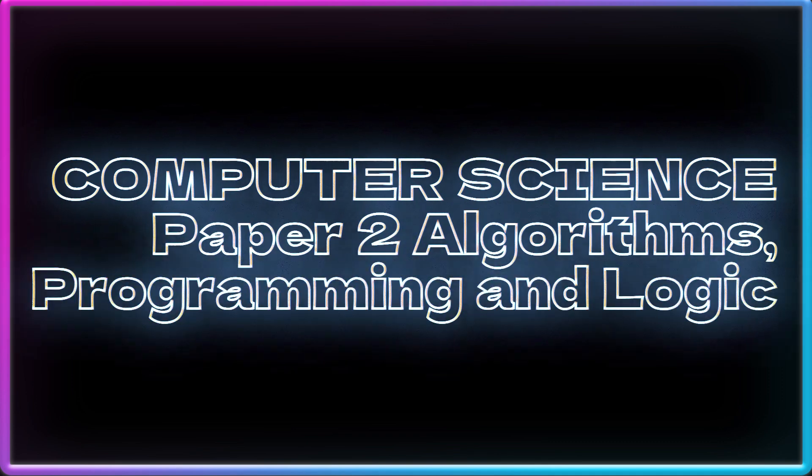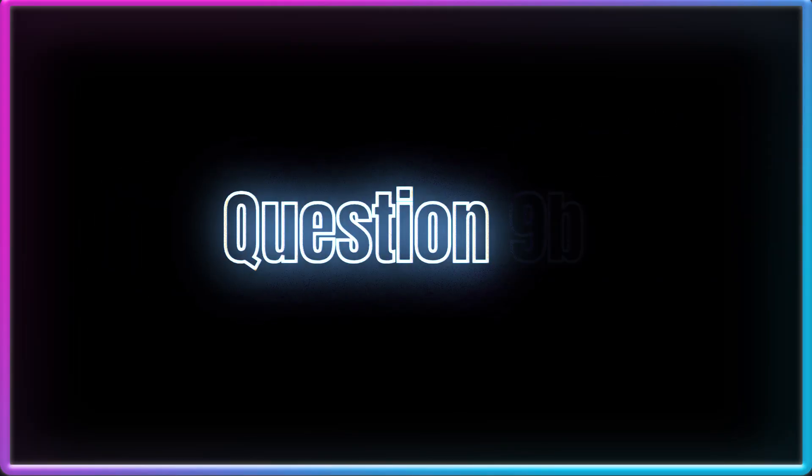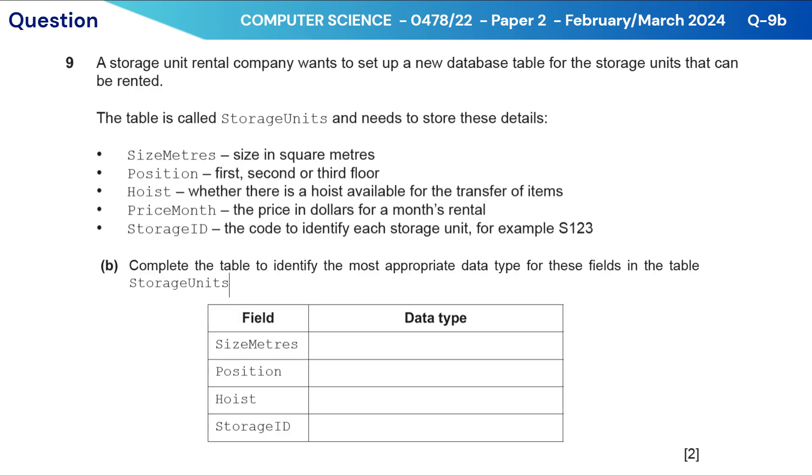Hi guys, welcome to this video. Today we are going to solve question 9 part B of the 047822 February-March 2024 past paper. The question is, a storage unit rental company wants to set up a new database table for the storage units that can be rented. The table is called storage units and needs to store these details.